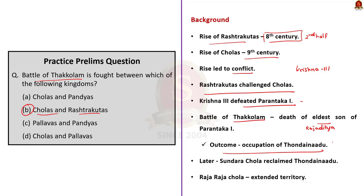Tondainadu is a historical region located in the northernmost part of Tamil Nadu, adjacent to the southernmost part of Andhra Pradesh. Sundara Chola, the grandson of Parantaka Chola, reclaimed the territory of Tondainadu from Rashtrakutas. Subsequently, Cholas under the leadership of Raja Raja Chola extended the boundaries of the Chola Empire to the southern border of modern-day Odisha. The Chola Empire reached its zenith under the leadership of Raja Raja Chola.